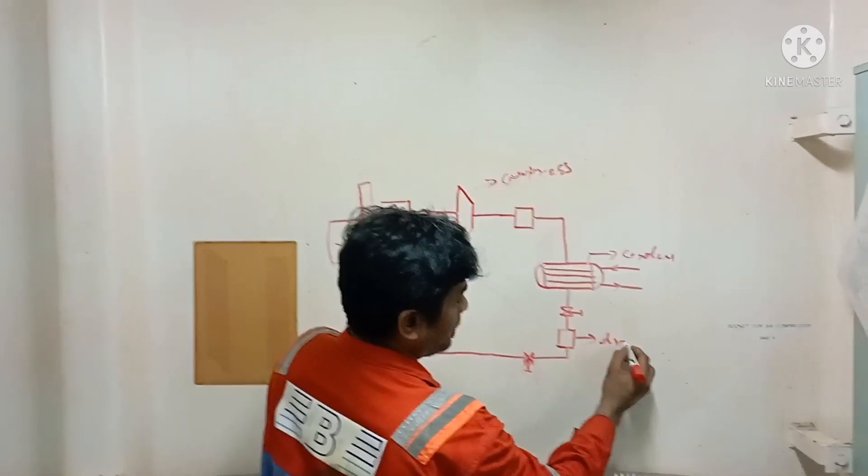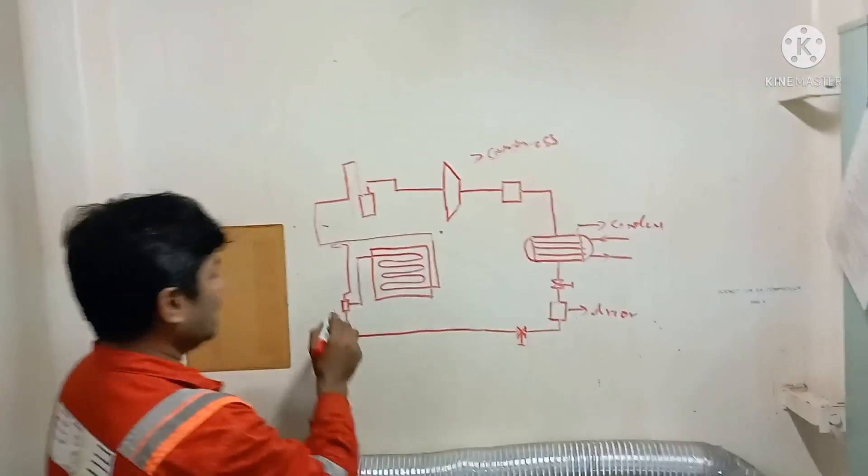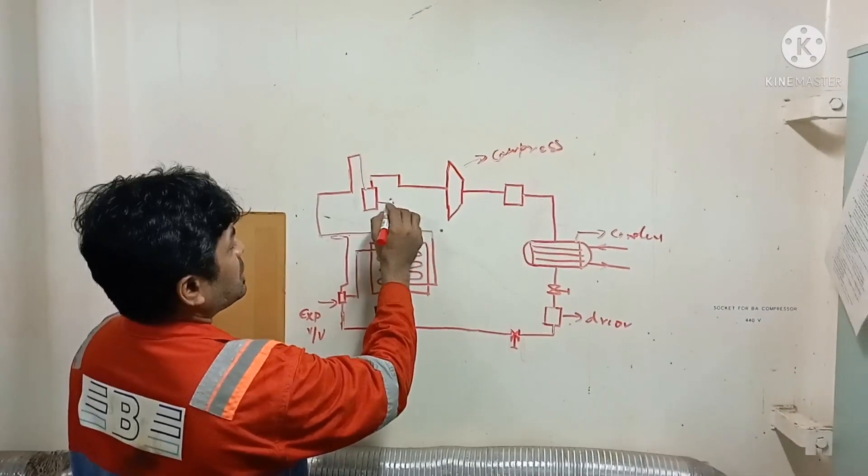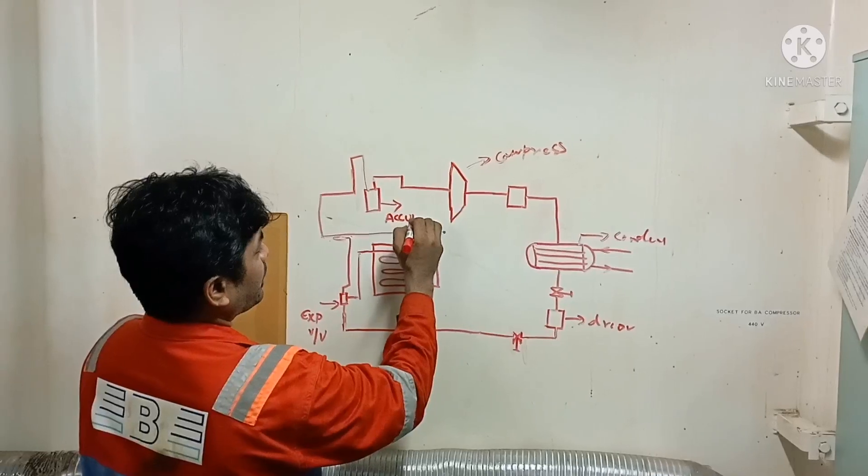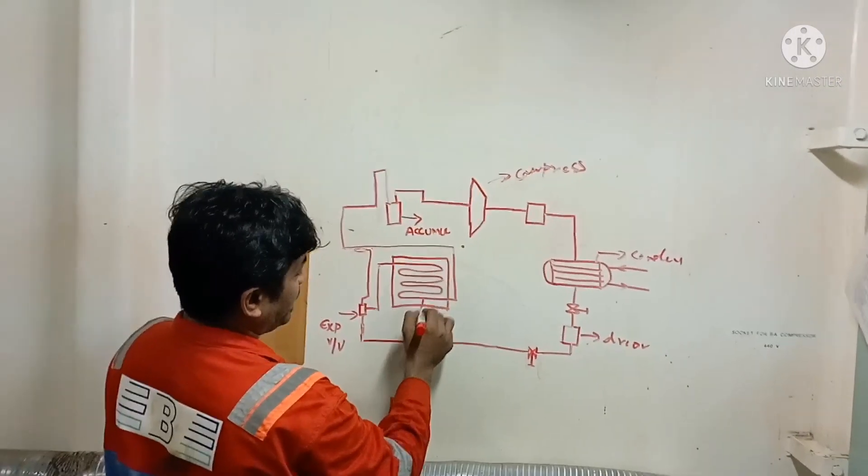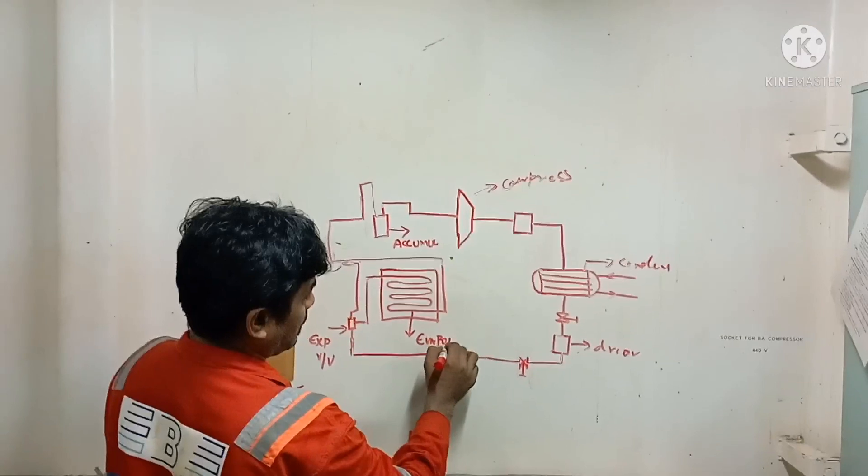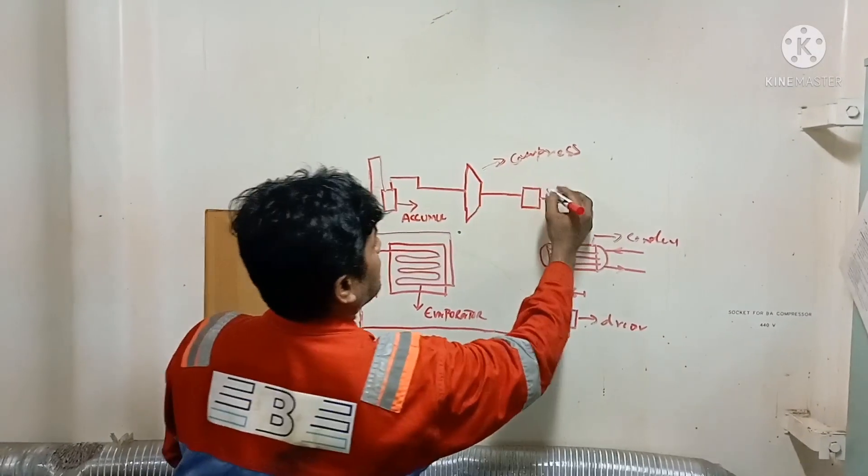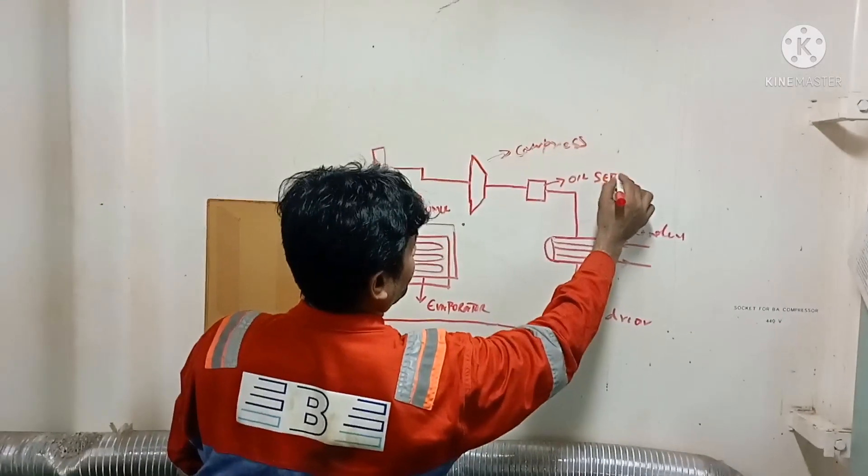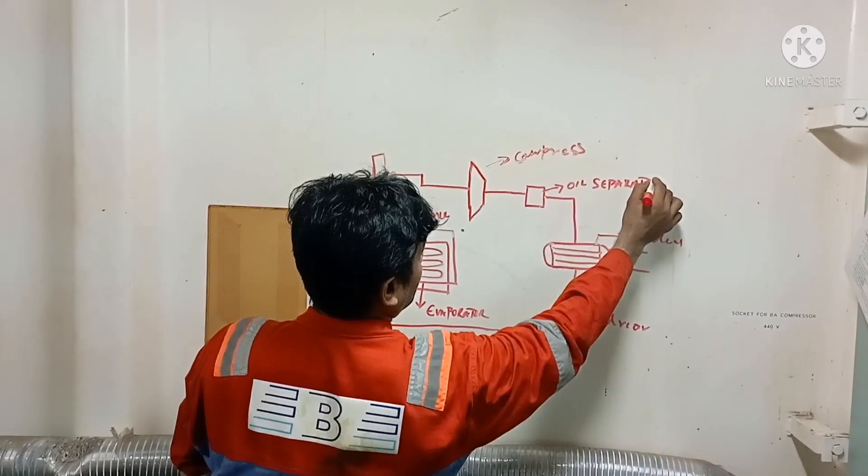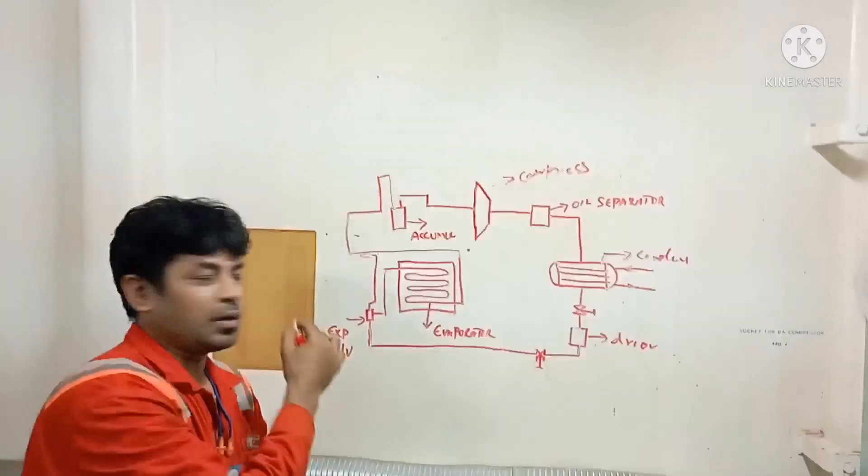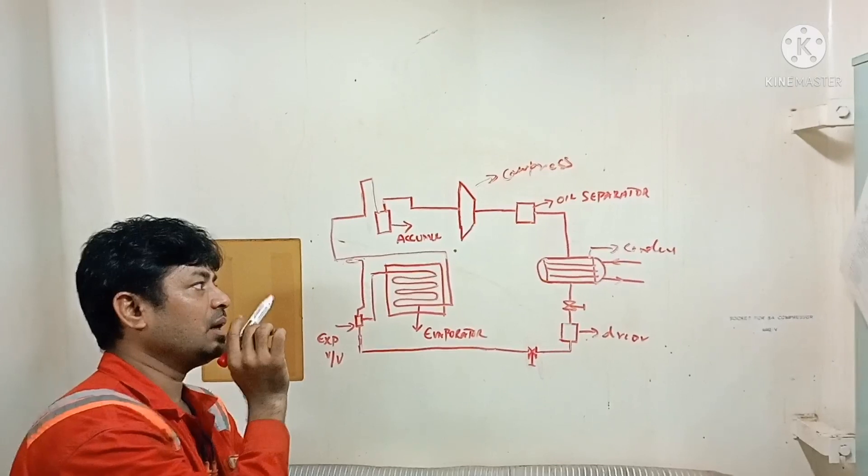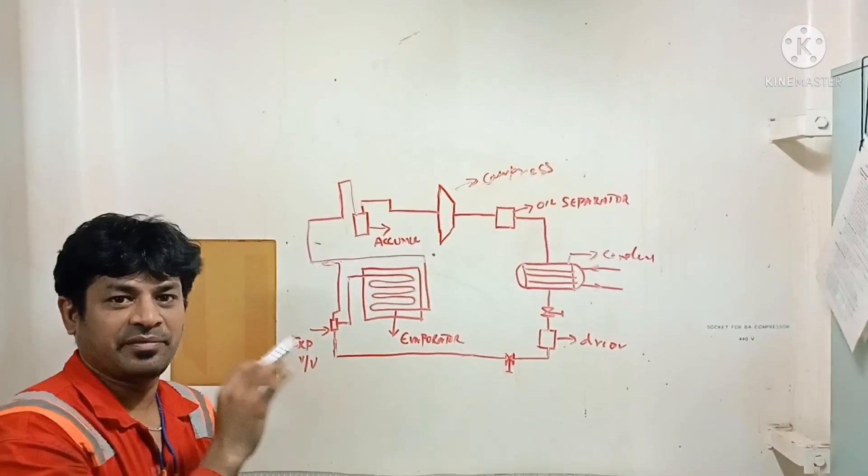This is your dryer, this is your expansion valve, this is your accumulator, this is your evaporator, and this is your oil separator. These are all the important components which are implemented in your Provision Refer compressor.